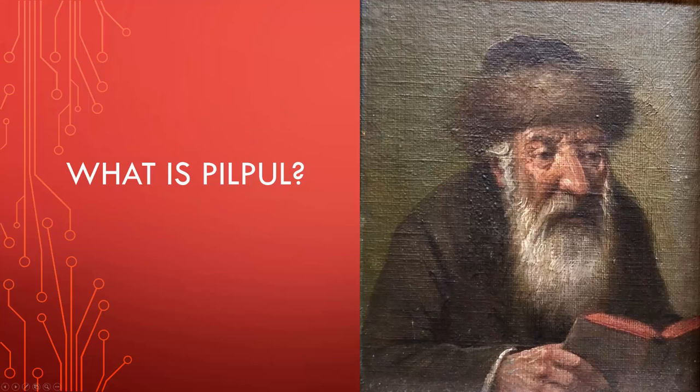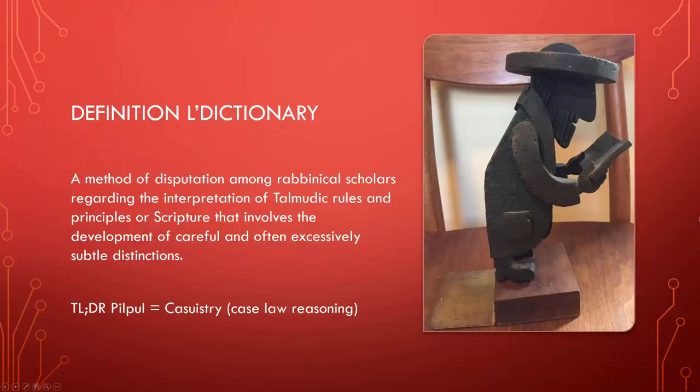What is Pilpul? The official definition is that it's a method of disputation among rabbinical scholars regarding the interpretation of Talmudic rules and principles of scripture that involves developments of careful and subtle distinctions. Basically it's the same thing as casuistry, which is reasoning from case law — you take cases of law and derive general principles from them. The informal definition of casuistry, which applies to Pilpul, is splitting hairs in order to prove things that aren't even there.